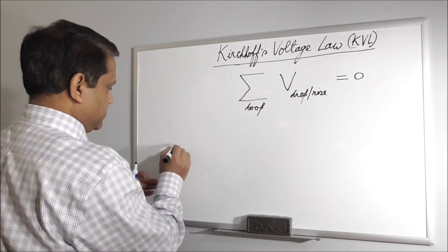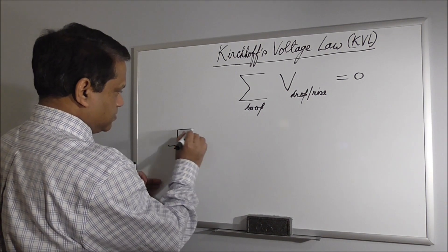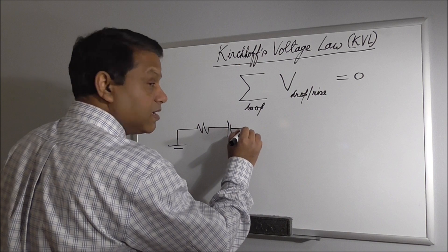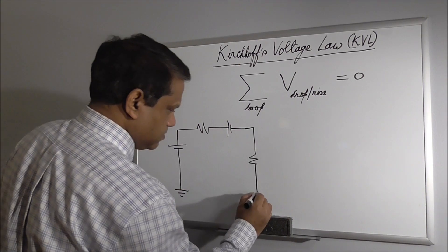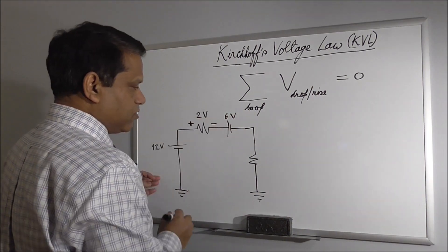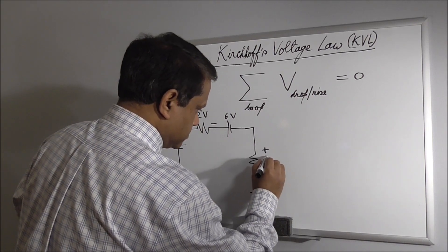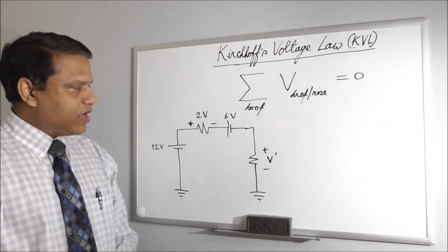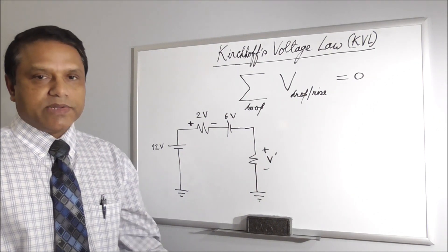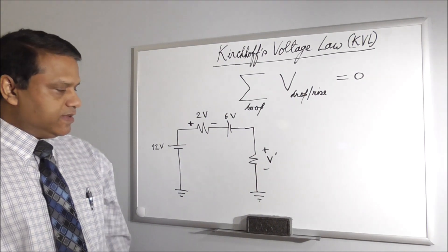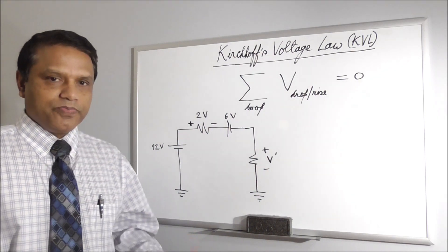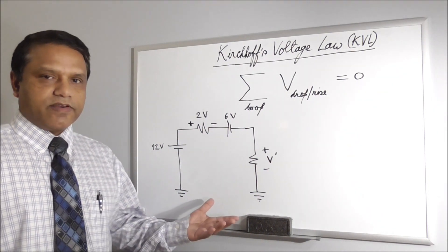Let's explain that with an example. So we have a voltage source, a resistance, and another voltage source. This is 6 volts and 2 volts. In this circuit we have 2 voltage sources — this is the first time we have seen such a circuit. But it's possible; you can have multiple voltage sources. Another new thing here: we have 2 grounds. This is the first time we have seen this. Actually I did this on purpose so you get used to it. This is nothing different than what we learned before.